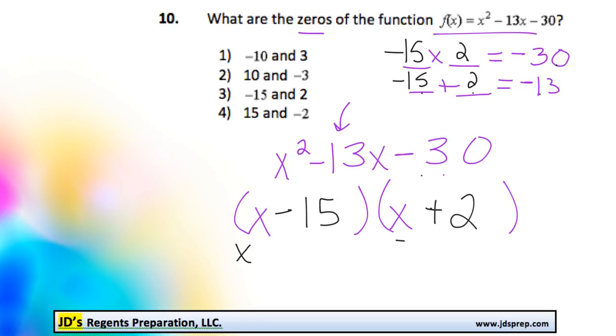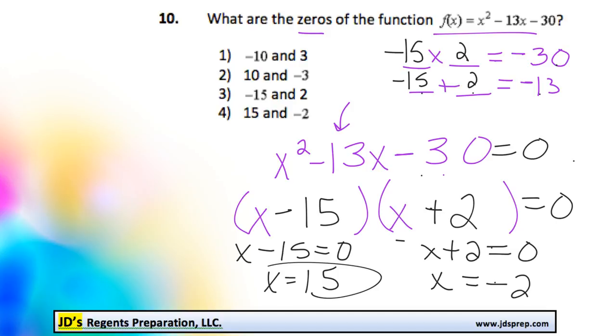And so that means to find the zeros, we set both of these equal to 0. Because all of these are equal to 0. I forgot to do that. And that means x is going to equal 15, and x is going to equal negative 2.